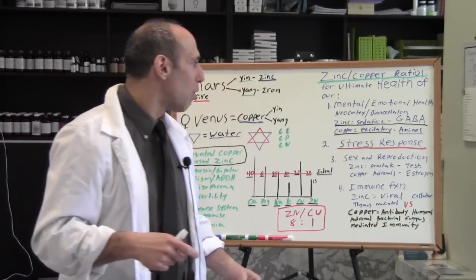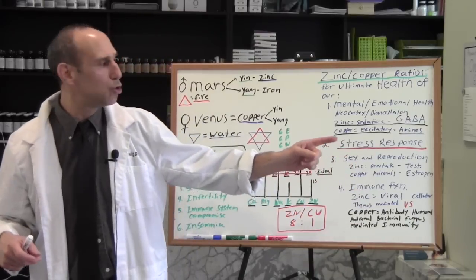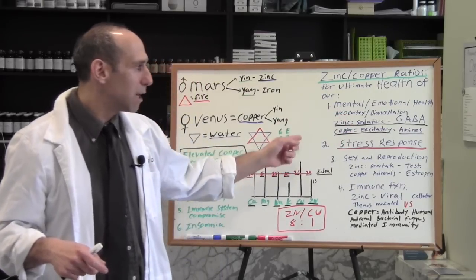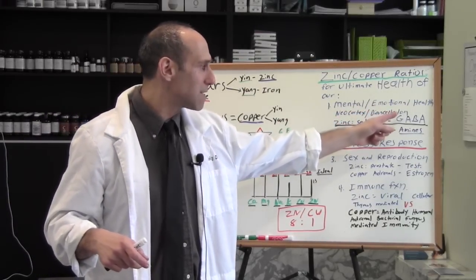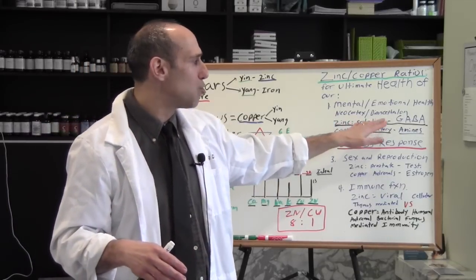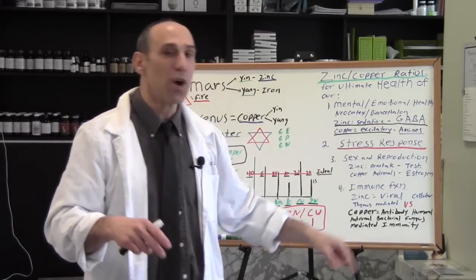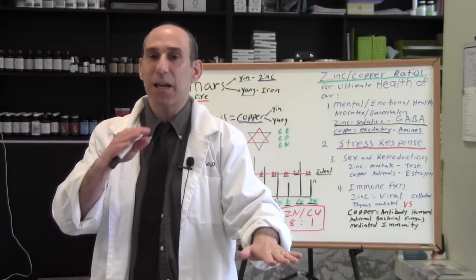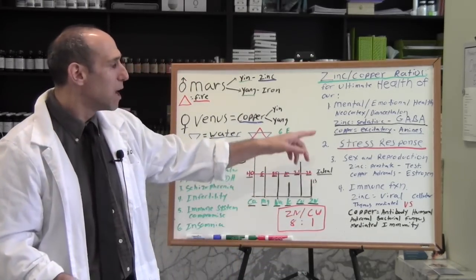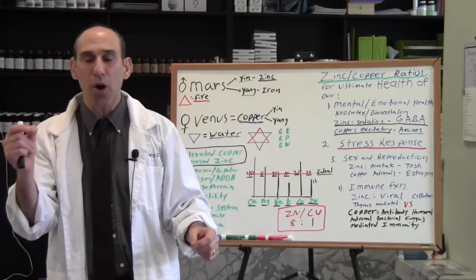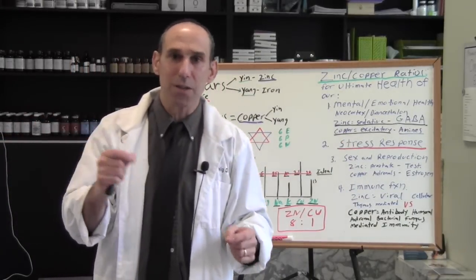And one of them is mental, emotional health, because as I had alluded to earlier, zinc is responsible for the neocortex and copper is responsible for the diencephalon. So zinc is more sedative because it has a huge influence on GABA, one of those neurotransmitters, which is very sedating and calming and relaxing.